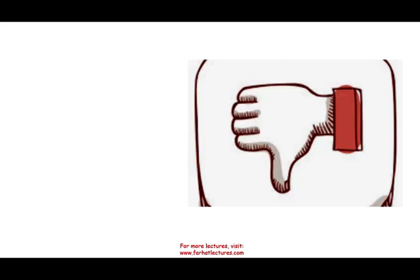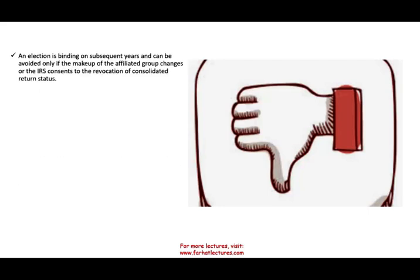Some disadvantages of consolidation: the election is binding upon subsequent years, and can only be avoided if the makeup of the affiliated group changes or the IRS consents to revocation of the consolidated return status. When you elect an affiliated group, all parties involved must agree. If that's not the case, you cannot have it, and sometimes you need IRS consent to stop preparing the tax return for the whole group. Also, recognition of losses from certain intercompany transactions might be deferred — and that's not good, because in taxes you want to take your losses, not defer them.